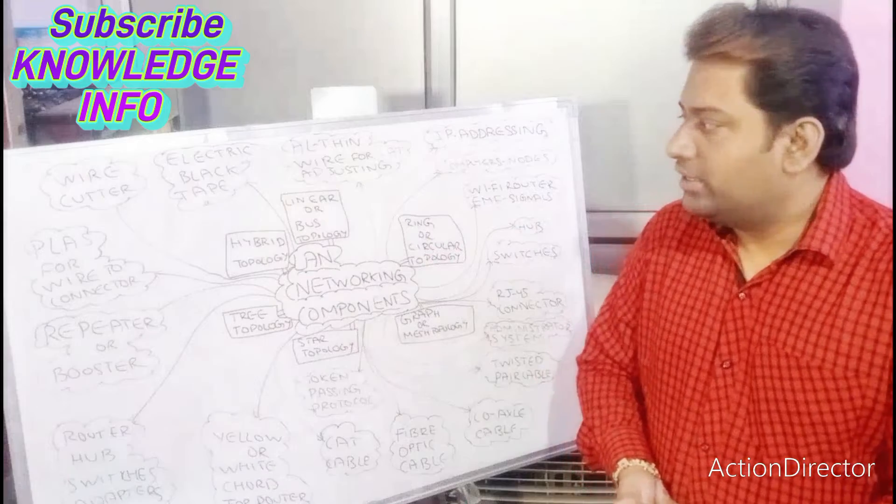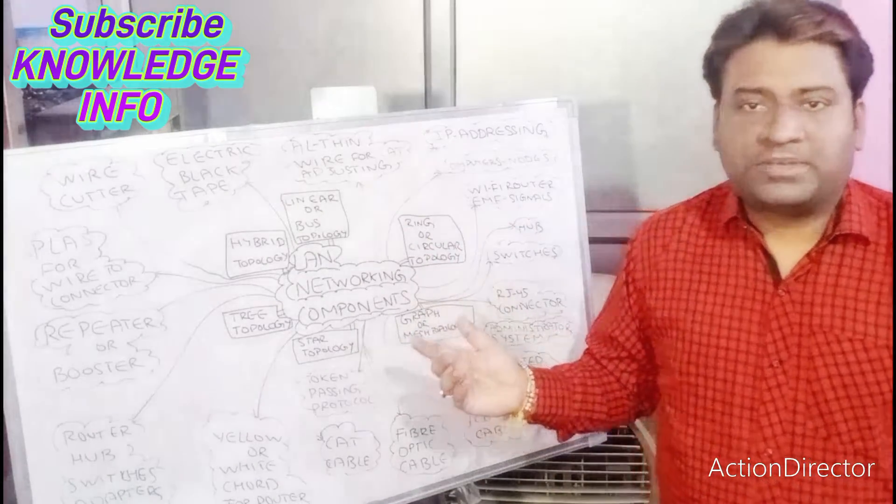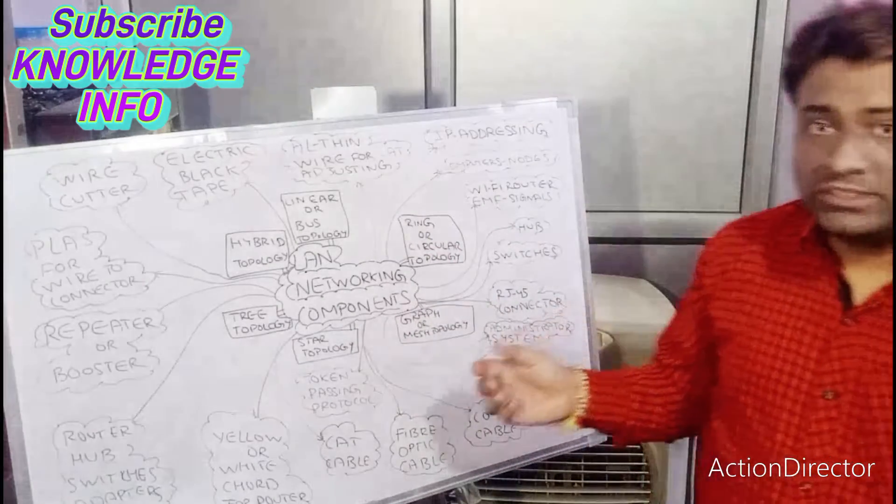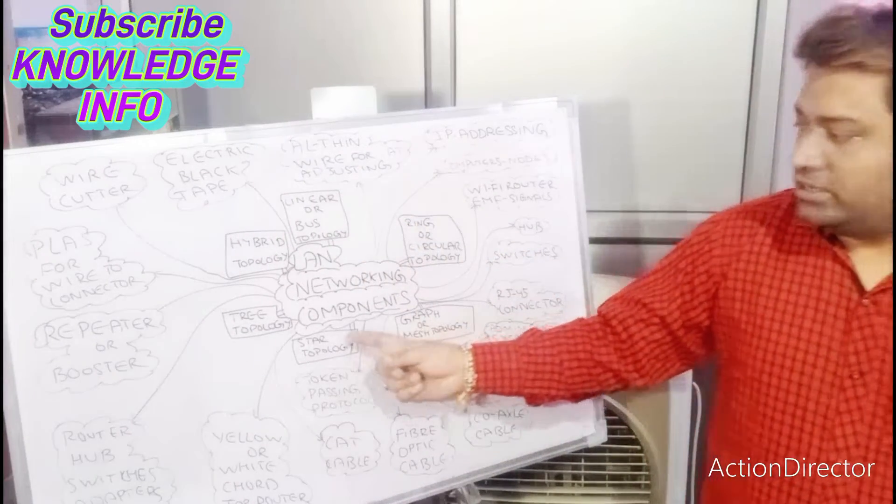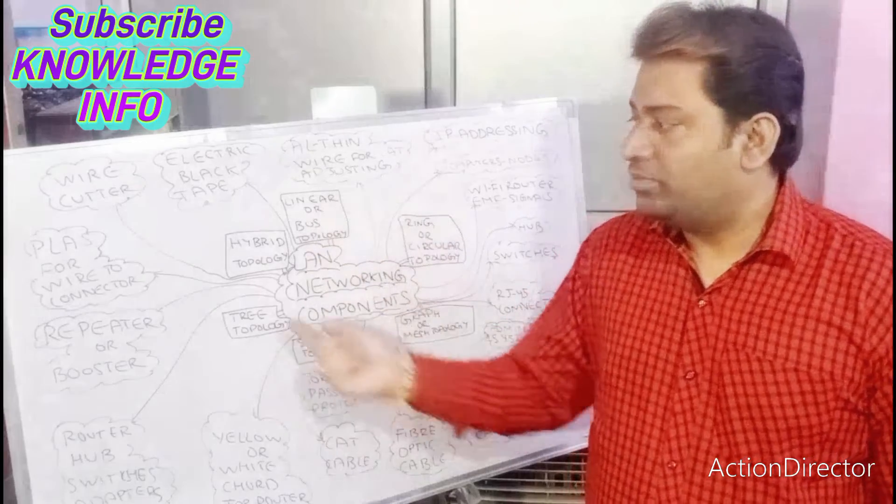Before we talk about the components, we have six types of topologies: linear bus topology, ring topology, mesh topology, star topology, tree topology, and hybrid topology which is a combination of all topologies.